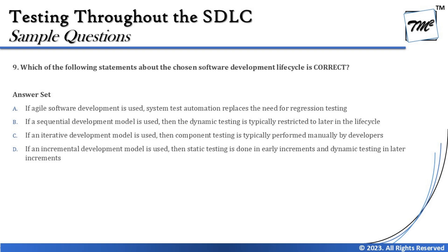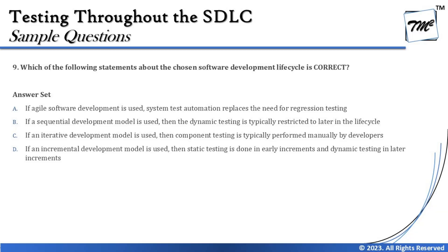Option C says: if an iterative development model is used, then component testing is typically performed manually by developers. In iterative models like agile or spiral, we work in tight timelines with repeated cycles. Talking about manual testing is not ideal here — in iterative models we prefer to achieve as much automation as possible to save time. So C is not a valid answer.